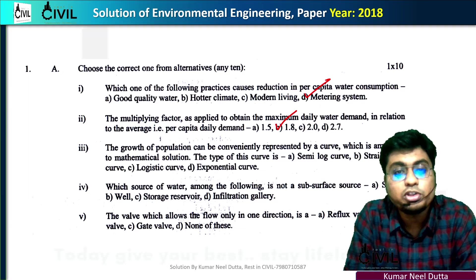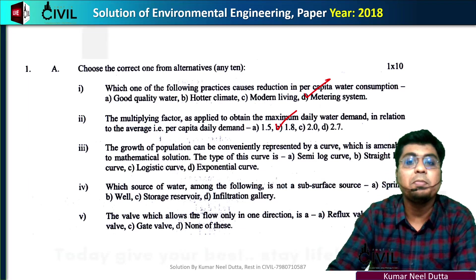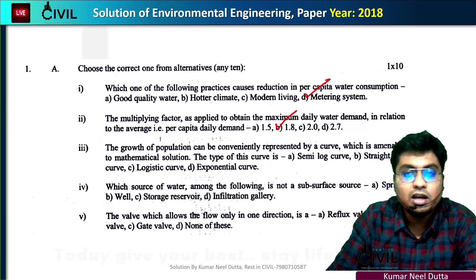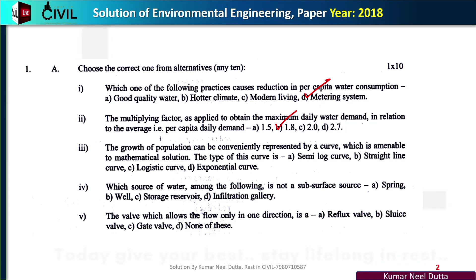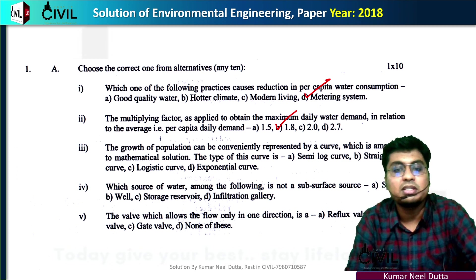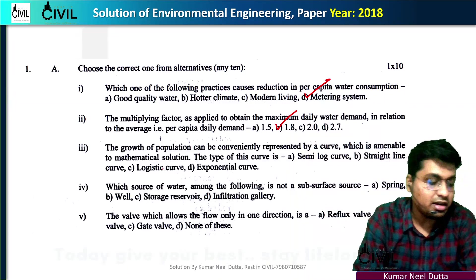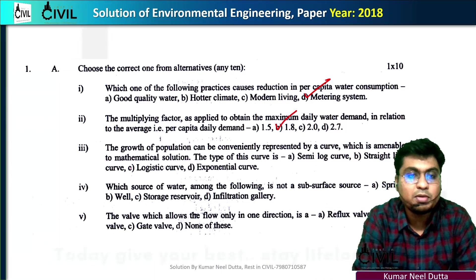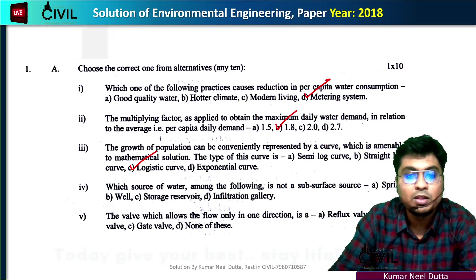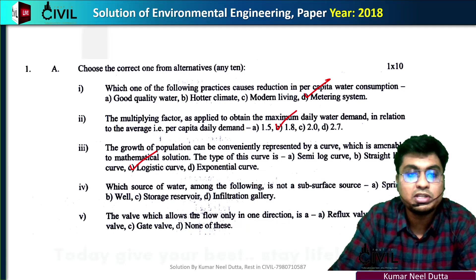Number 3: the growth of population can be conveniently represented by a curve which is amenable to mathematical solution. The type of this curve — the curve that represents population growth — is known as the logistic curve. Option C will be the correct.